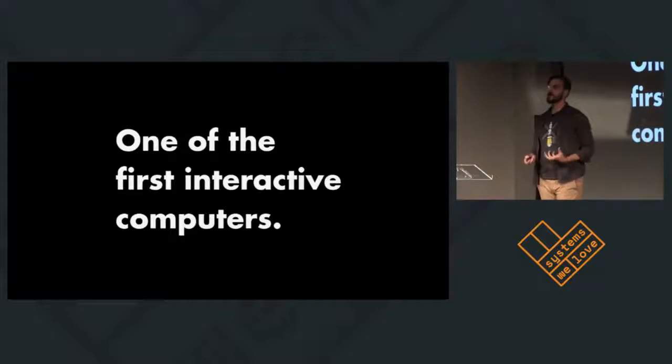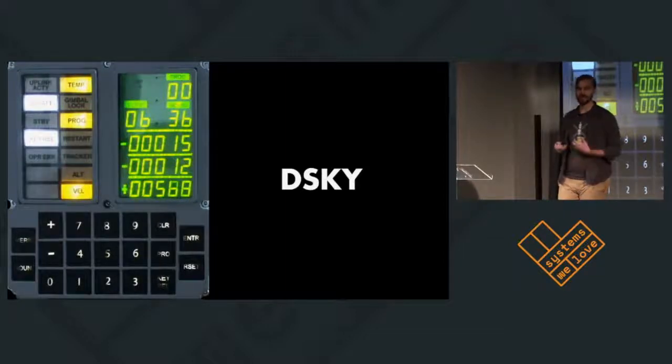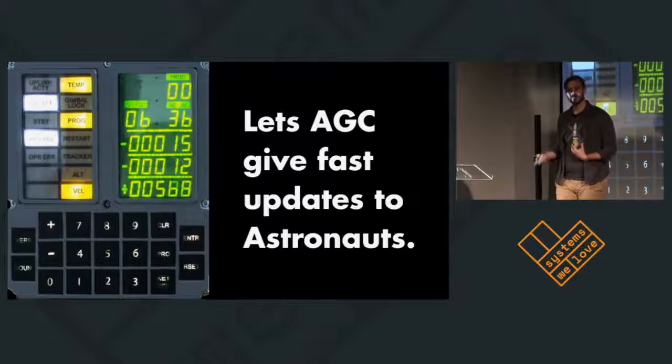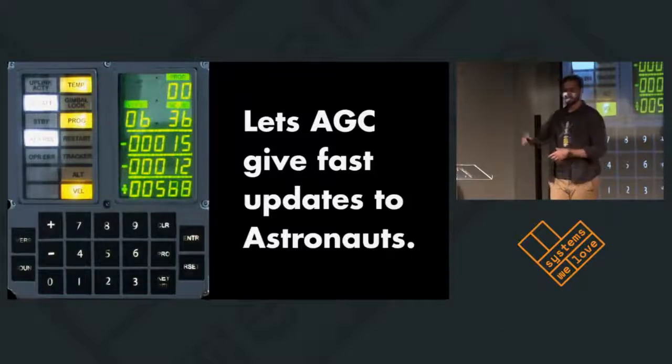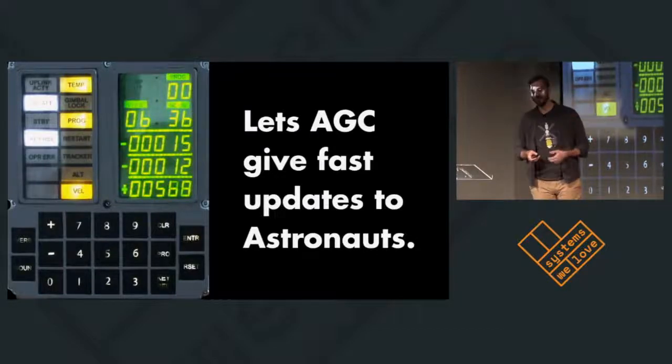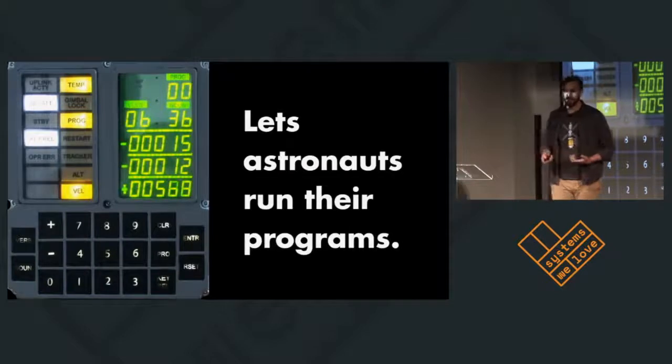The AGC is one of the very first interactive computers as well. So the astronauts and the computer interact through a thing called the DSKY, which stands for the display keyboard. And the DSKY lets the AGC give fast updates to the astronauts. So you can see that there's a little display here, and the astronauts would know, based on the running program, which is called noun, how to interpret the display. And the astronauts are also able to run their own programs by inputting it into the DSKY and forcing a noun to run with the appropriate verb.